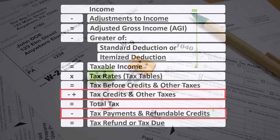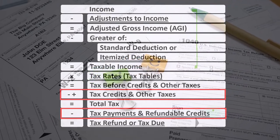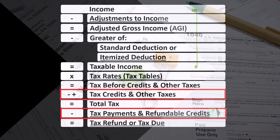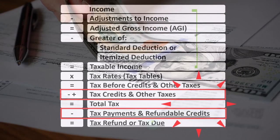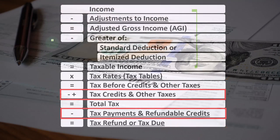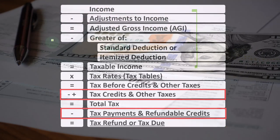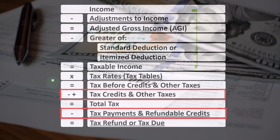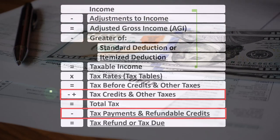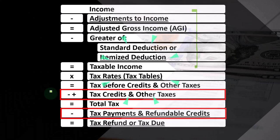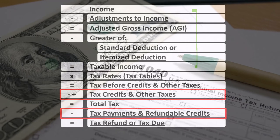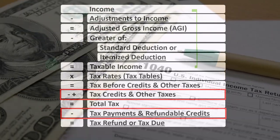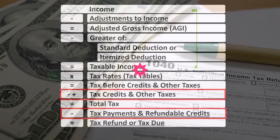Then we deal with credits and other taxes, like the self-employment tax, followed by payments in the form of estimated tax payments and withholdings, to get to the bottom line — the amount refunded or amount due. Credits are similar to deductions in that we like them both. However, a dollar credit is preferable to a dollar deduction because we typically get the full benefit of the credit, whereas a dollar deduction only reduces taxable income by an amount based on the tax rate.